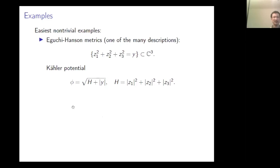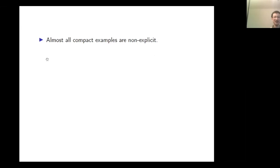Let me tell you some explicit examples of Calabi-Yau metrics. These are really meant to be basic. The number-zero example would be Euclidean space — flat CN with the standard complex structure and standard metric — which is of course a solution of the Calabi-Yau condition.